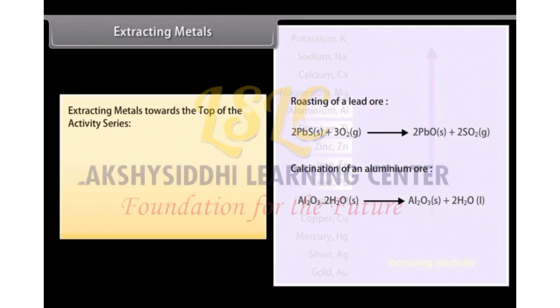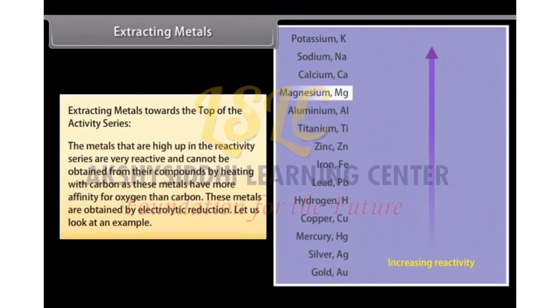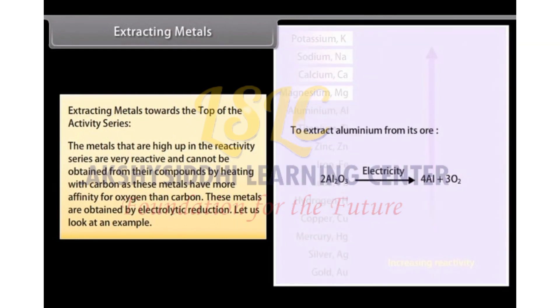Extracting metals towards the top of the activity series. The metals that are high up in the reactivity series are very reactive and cannot be obtained from their compounds by heating with carbon as these metals have more affinity for oxygen than carbon. These metals are obtained by electrolytic reduction.